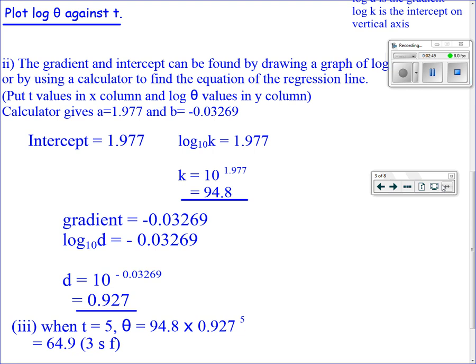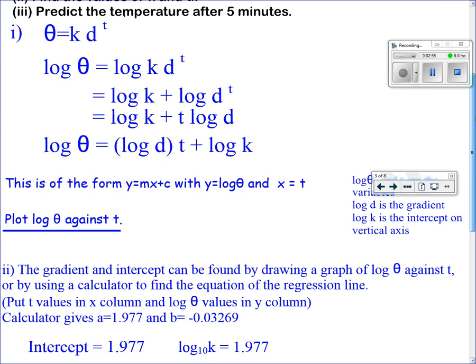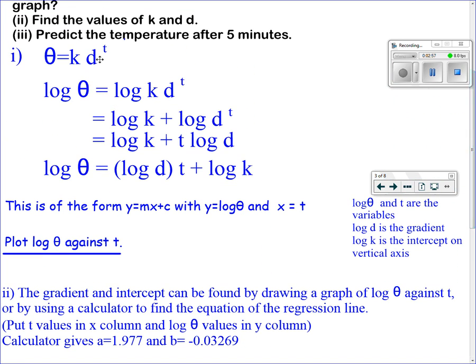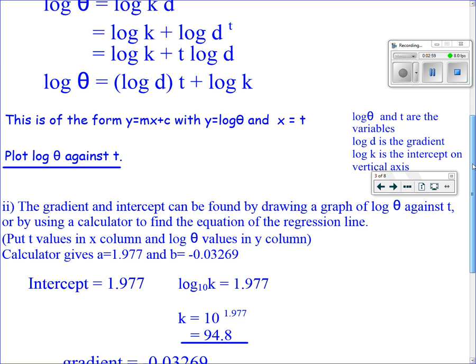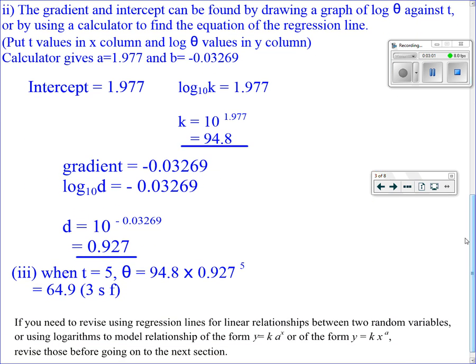When we know the constants k and d, we can put those into our equation θ = kd^t to get θ as a function of t. When t = 5, we can work out the value of θ. θ = 94.8 × 0.927^5 = 64.9.